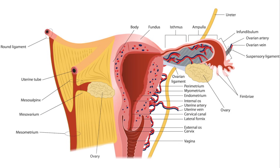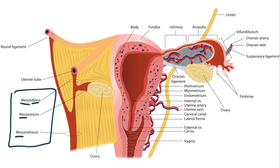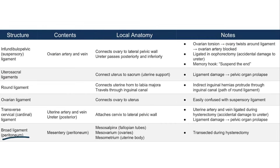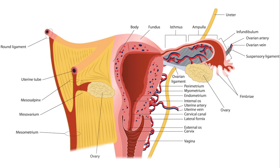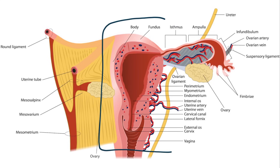The broad ligament contains the extensions of the uterine artery and vein above the transverse cervical ligament. The final point regarding the broad ligament is that it is transected during hysterectomy — if you have to remove the uterus, you're going to end up transecting the broad ligament.